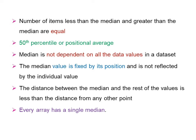The median value is fixed by its position and is not reflected by the individual values. The distance between the median and the rest of the values is less than the distance from any other point. Also, every array has a single median.